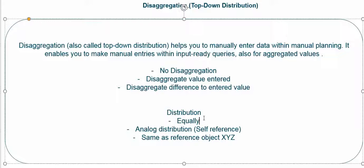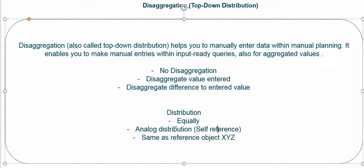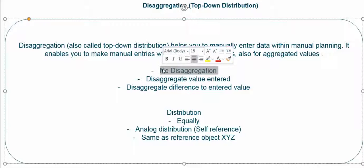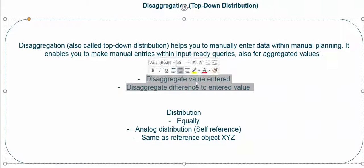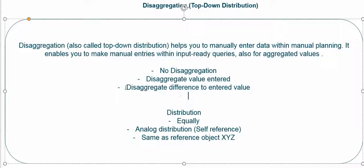Once you select any of these disaggregation functions, you also have to choose how the data will be distributed — whether it will be equally distributed, analog distribution, self-reference, or same as reference object. If you select no distribution it doesn't actually do anything, so the main distribution starts with disaggregate value entered and the third option.